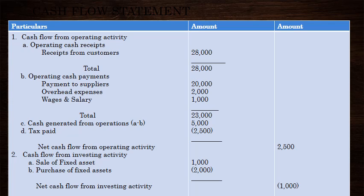We will see the cash flow from the operating cash receipts — the cash flow from the customer. We will see the amount of $28,000. The total amount is $28,000. We will see the payment to suppliers — the payment cost amount from the band itself.